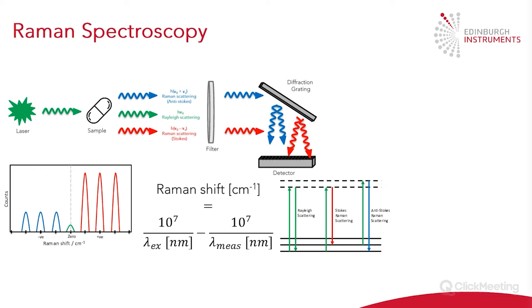The energy difference is then converted into wavenumbers, and this is referred to as the Raman shift. It's plotted against counts to give us our Raman spectrum.